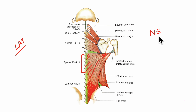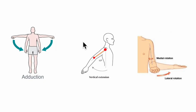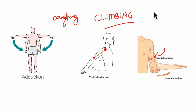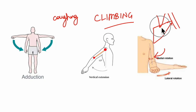Looking at the nerve supply of the latissimus dorsi, it is mainly supplied by the thoracodorsal nerve. Its actions include adduction, extension and medial rotation of the shoulder. The latissimus dorsi muscle also helps in violent expiratory effort like coughing or sneezing. It is also called the climbing muscle. It also holds the inferior angle of the scapula in place as it crosses and inserts onto the humerus.